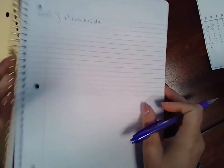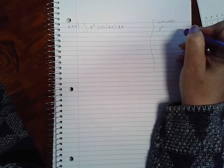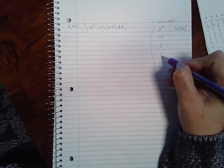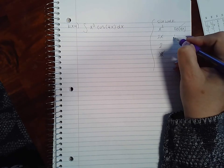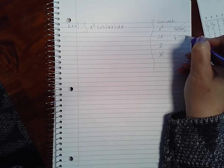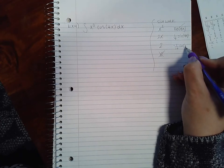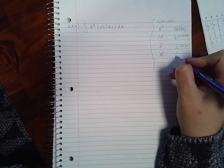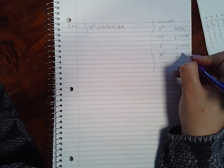For example 4, we apply the tabular method to x squared times cosine of 4x. Let u equal x squared and dv equal cosine of 4x. Taking derivatives: x squared, 2x, 2, then 0. Integrating cosine of 4x: 1 over 4 sine of 4x, then negative cosine gives negative 1 over 16 cosine of 4x, and one more integral of cosine gives 1 over 64 sine of 4x.